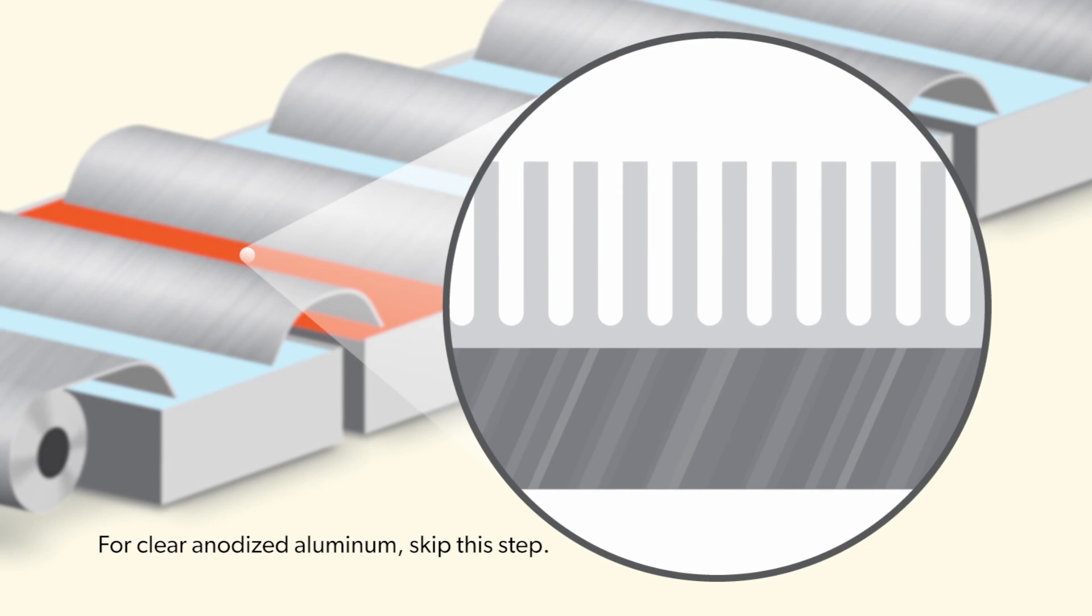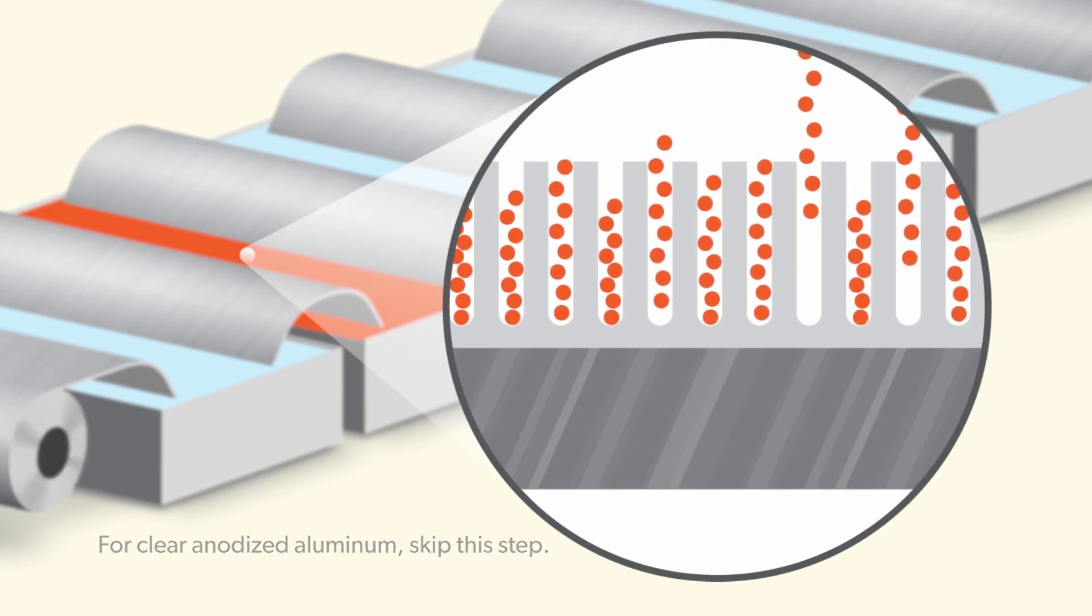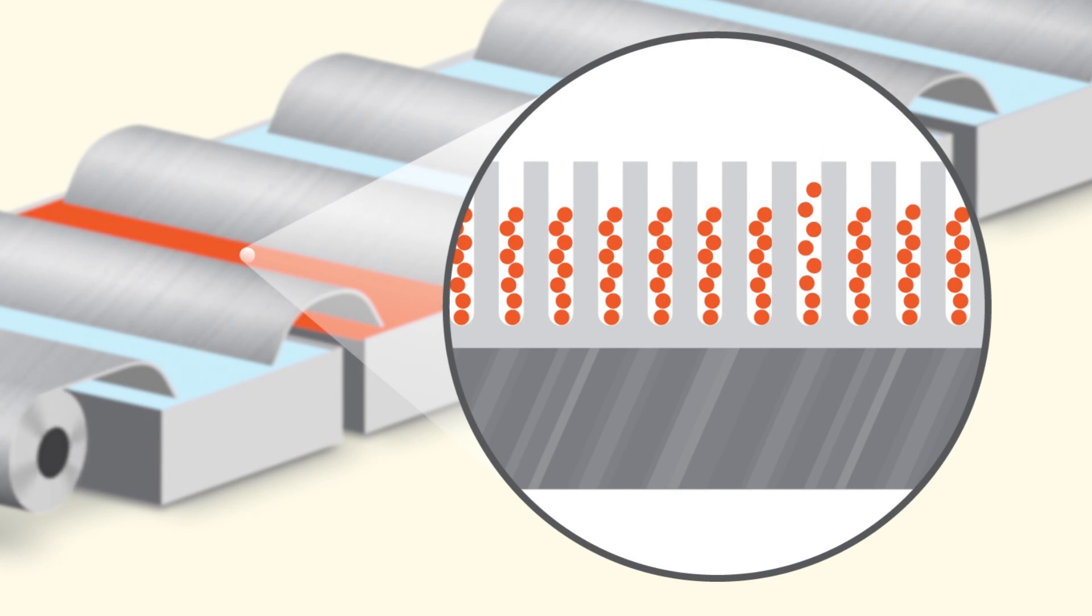Step four is where the color comes in. Dyes are added directly to the unsealed aluminum pores. Alternatively, you can add metal salts to achieve a more durable fade-resistant metal finish.